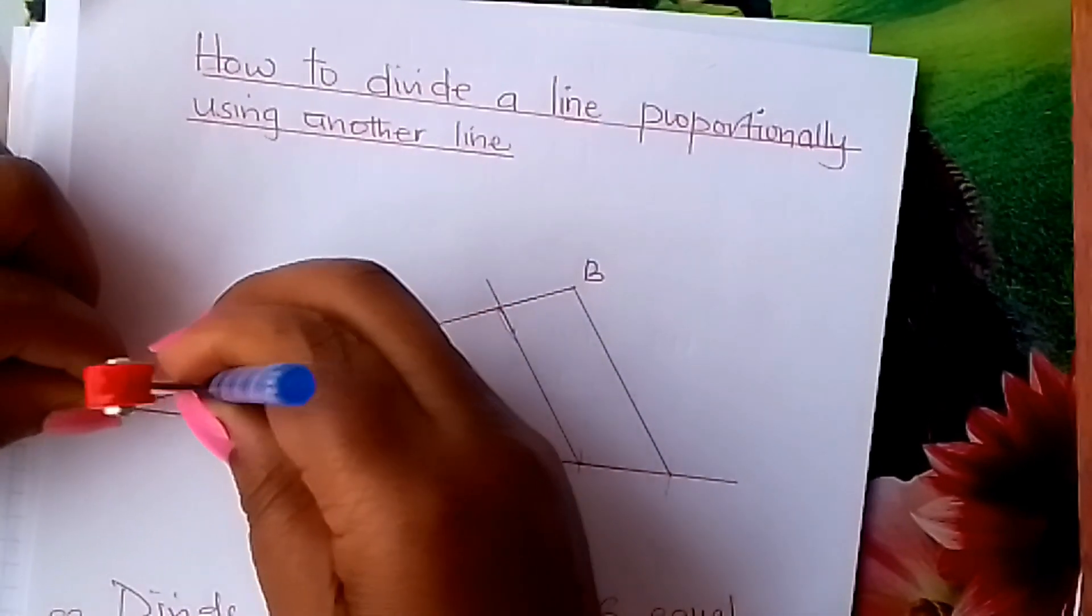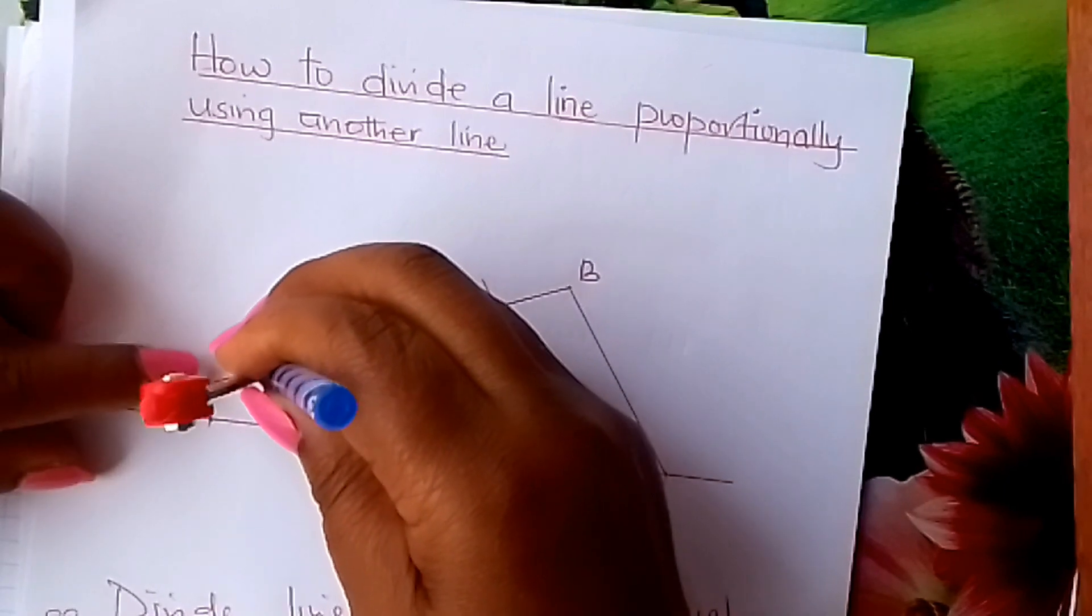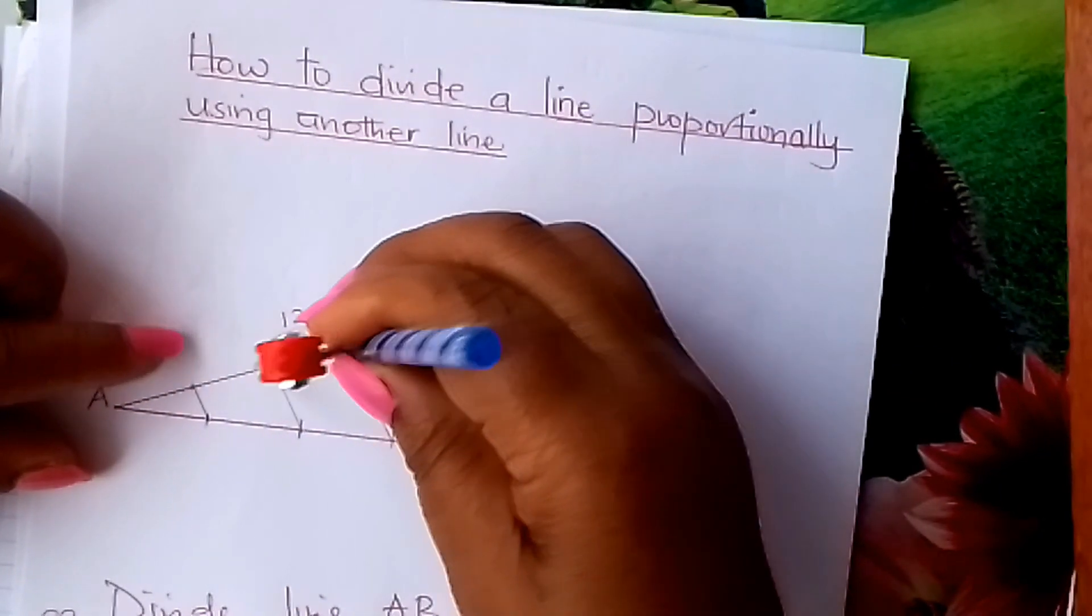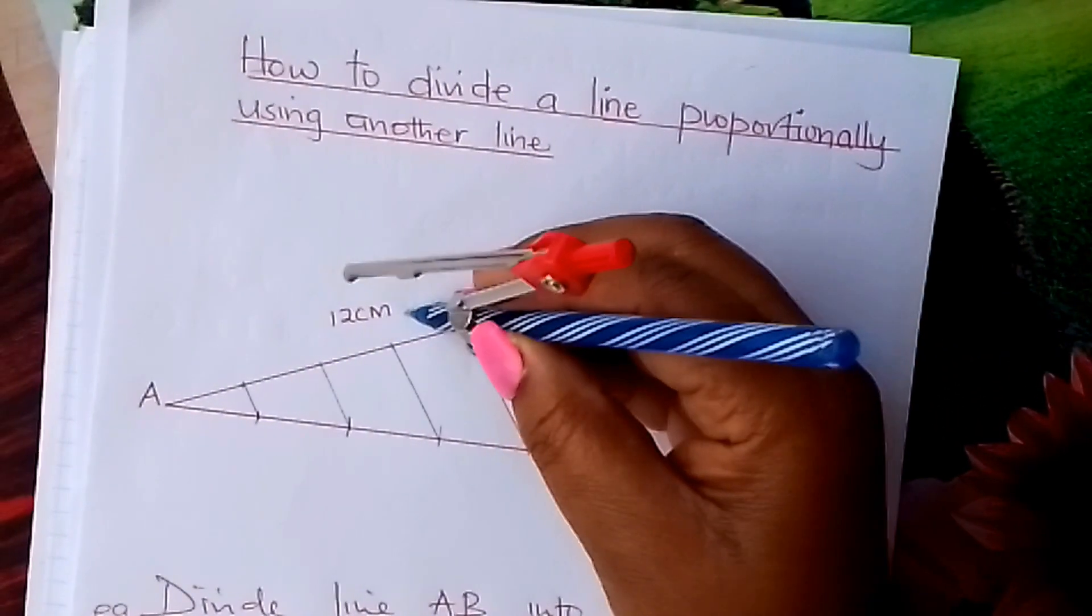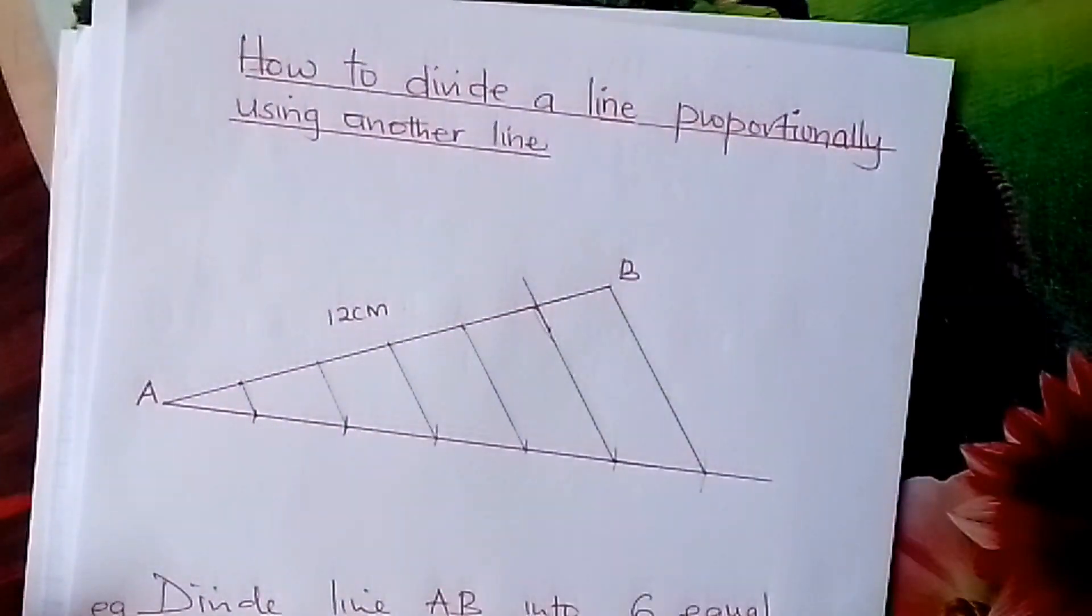Maybe I can take this one. They should be equal. Equal, learner. Look at that. Equal. And each one of them should be two centimeters because it is 12 divided by six.